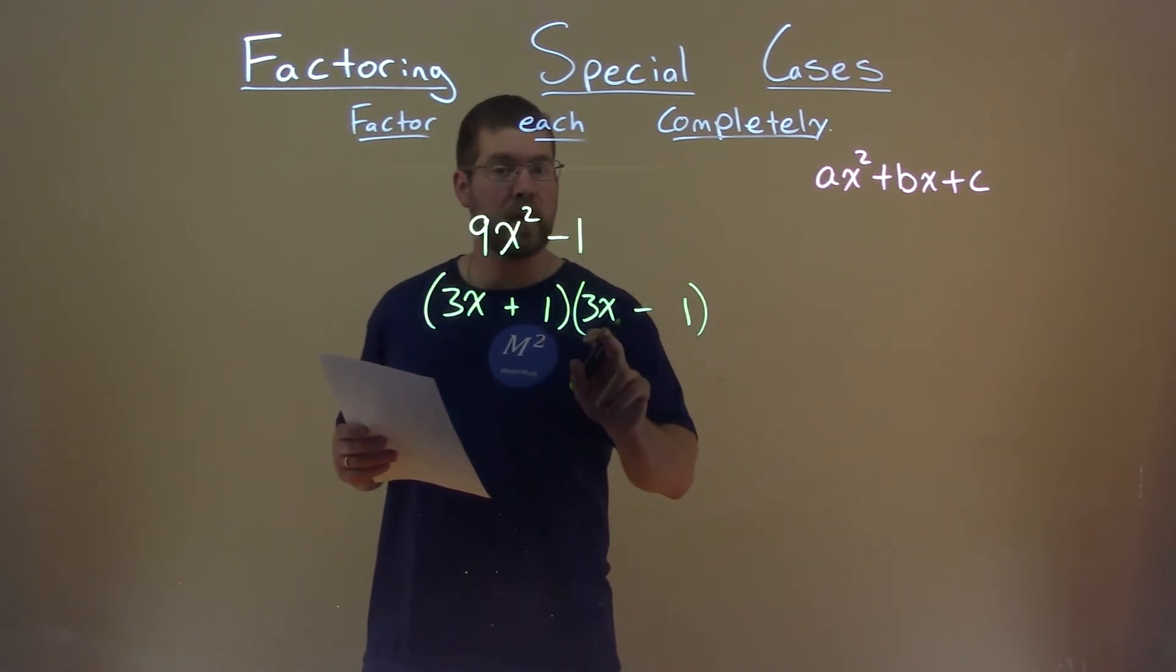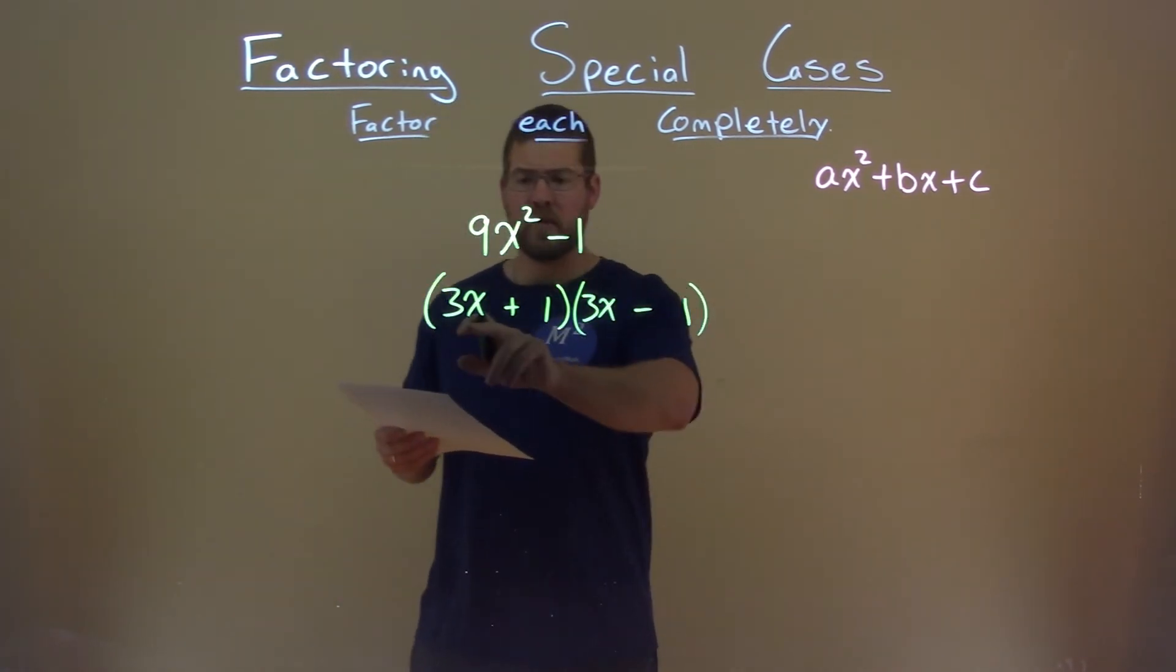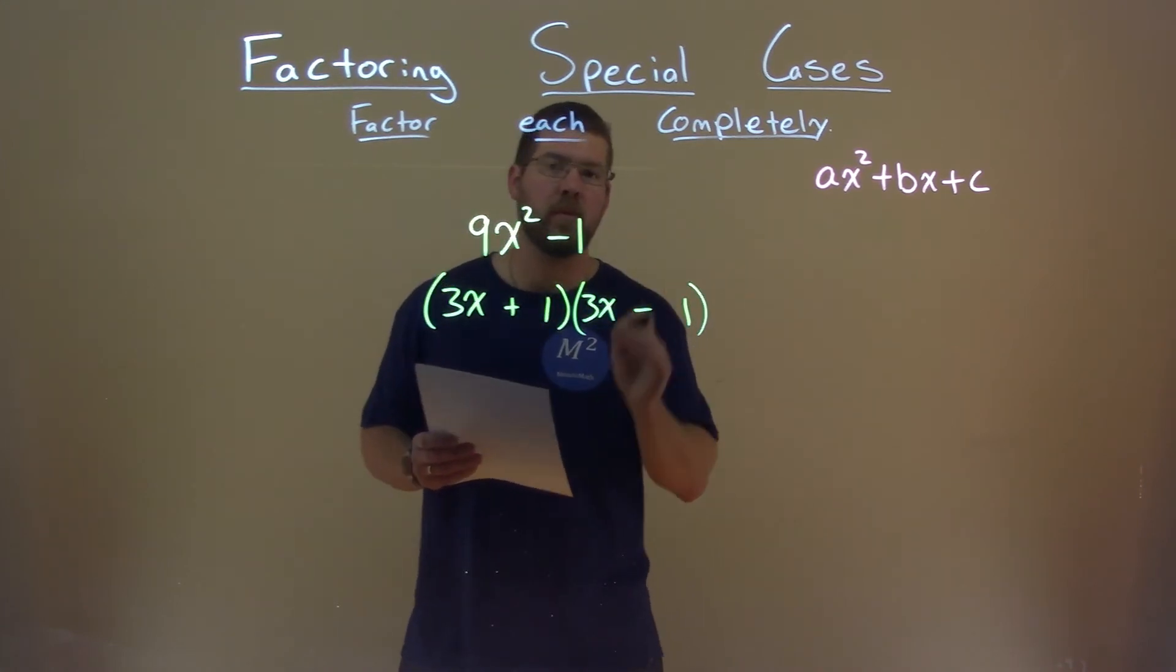We add that to 1 times 3x, well, it's 0x. So that cancels out, we have no b value, and there we have our answer. 3x plus 1 times 3x minus 1.